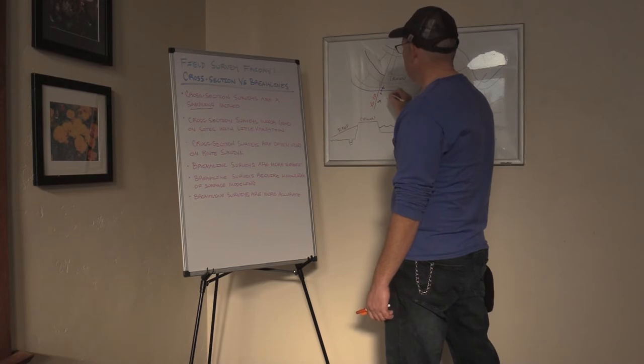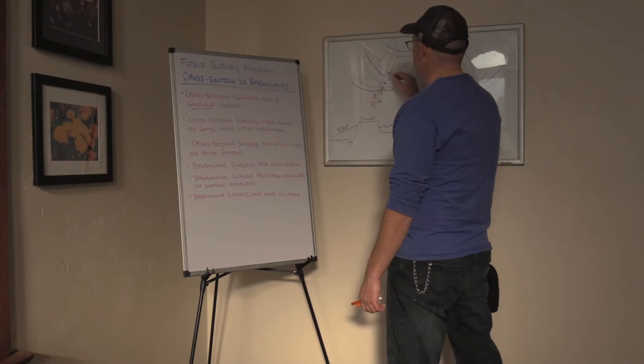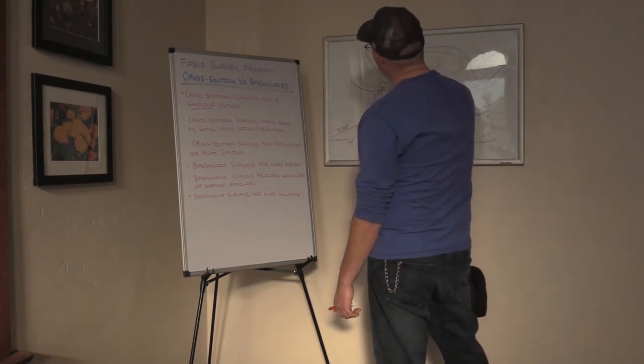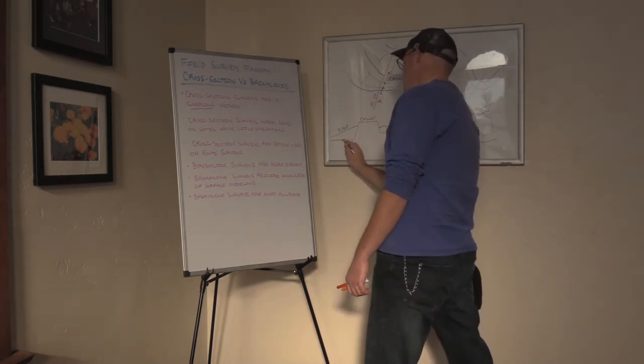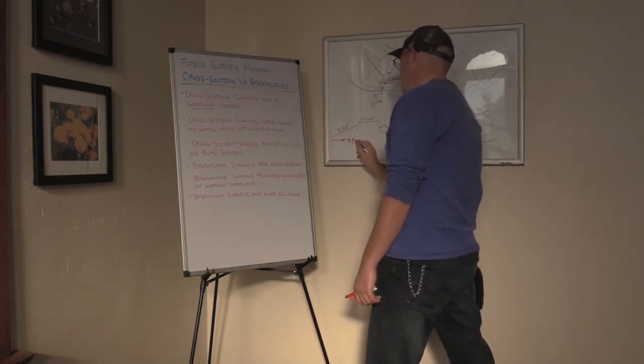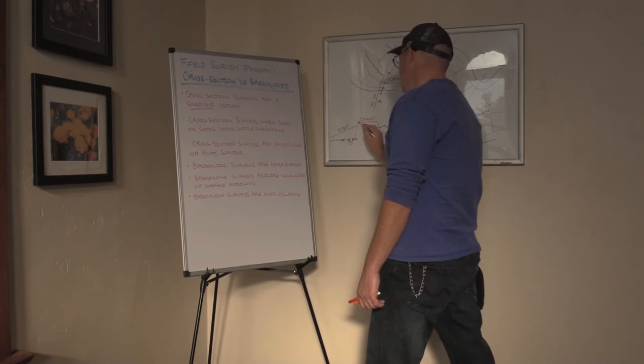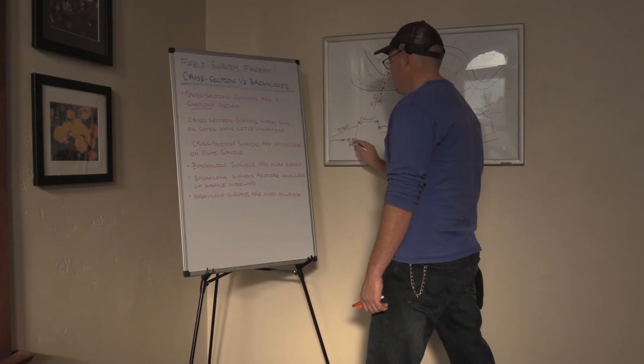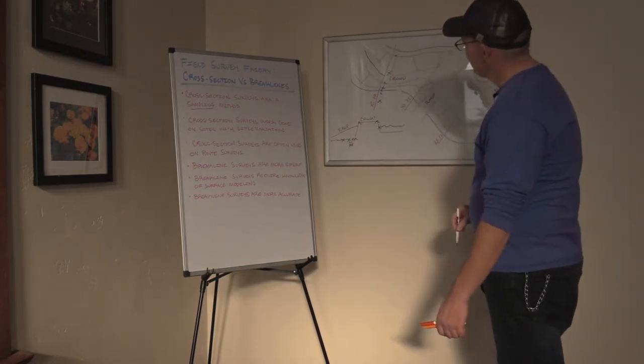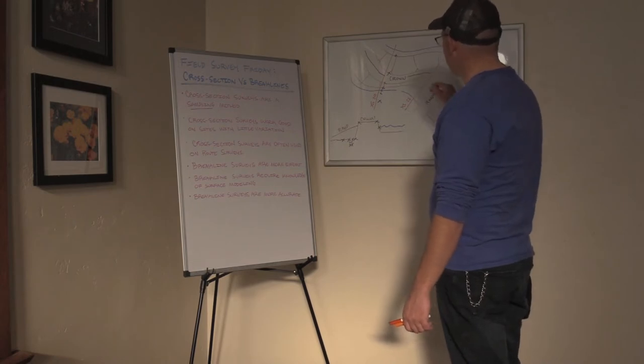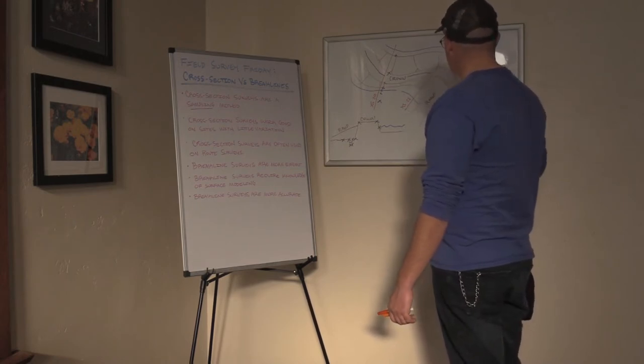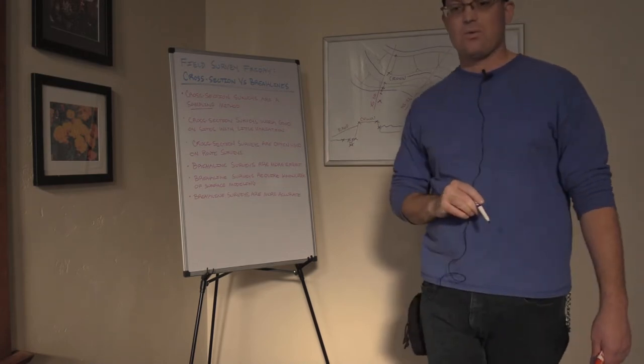The toe of the levee right here, the crown of the levee, crown of the levee, the two hinge points, we call them, water side toe. So I'm going to draw it on the profile, get a shot on the field, top of ditch, top of ditch, toe, hinge point on the crown, hinge point on the crown, edge of water. Or maybe you get a couple of bottom of ditch shots too, or edge of water shots. And you repeat that at every cross section. So then you go your next 200 feet, you repeat those shots. You go your next 200 feet, you repeat those shots. That's how a cross section survey works.